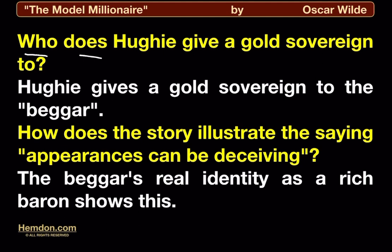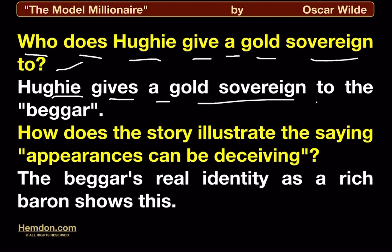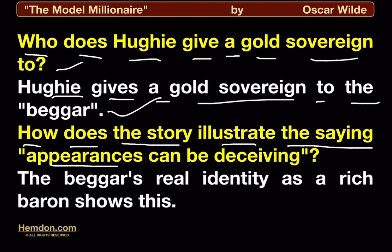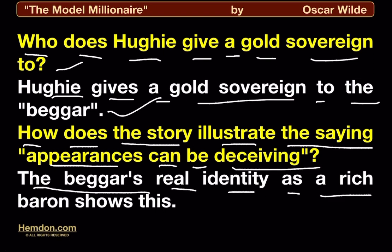Who does Hugh give a gold sovereign to? Hugh gives a gold sovereign to the beggar. How does the story illustrate the saying 'appearances can be deceiving'? The beggar's real identity as a rich baron shows this.